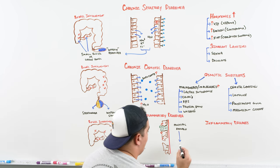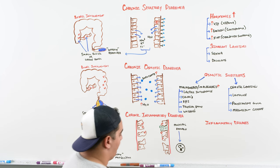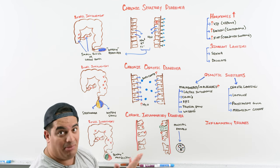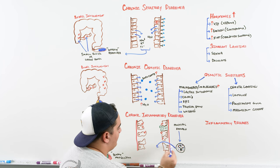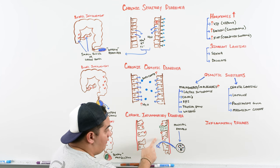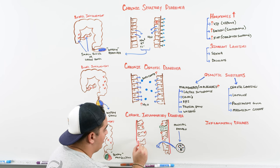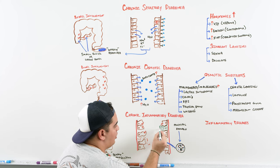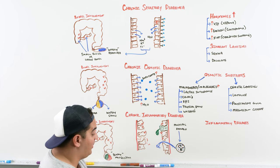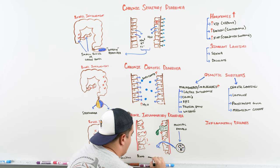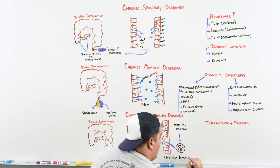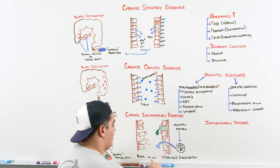With chronic inflammatory diarrhea, the immune system — particularly white blood cells — tries to come to the area and fight off whatever is causing the problem. Usually it's an inflammatory reaction from IBD or chronic infection. WBCs infiltrate the bowel, mucosal damage leads to blood in the stool, goblet cells produce mucus from the inflammation, and fecal WBCs release calprotectin.